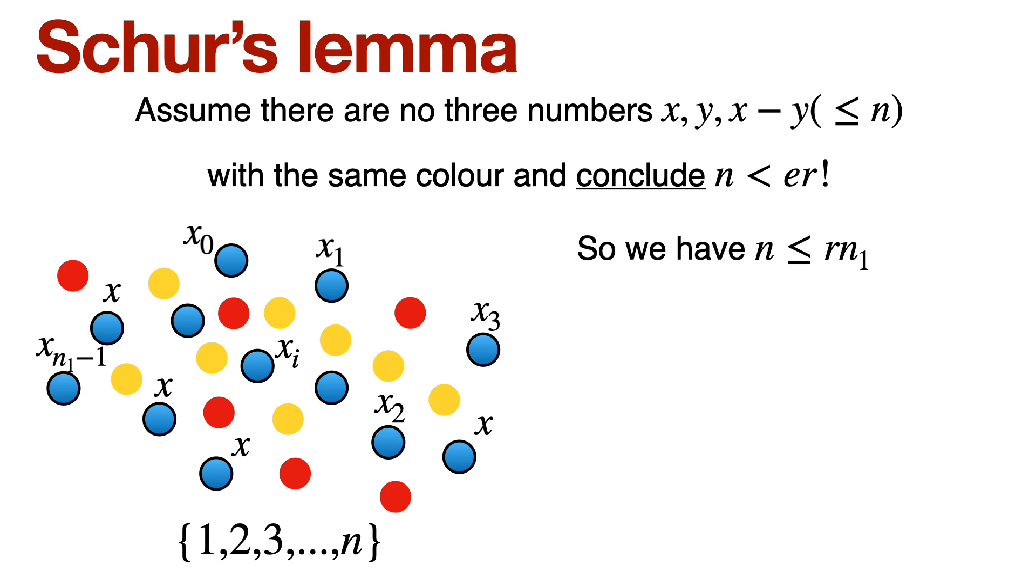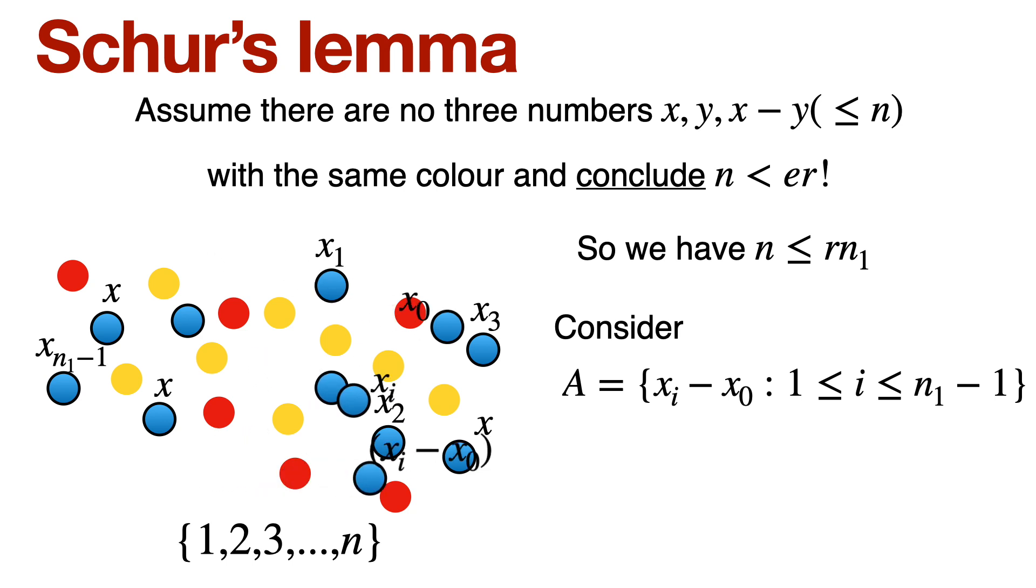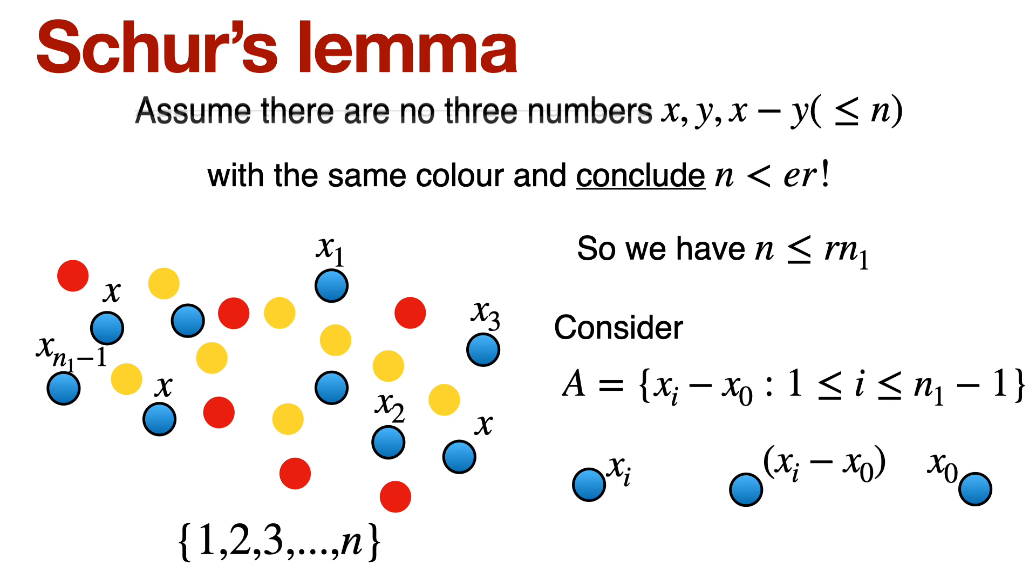Now here is the real genius of this proof, okay? What we do next is consider the following set. The set is we look at xi minus x0 as i varies from 1 to n1 minus 1. So basically we take the smallest number x0 and subtract it off from each of the elements x1 to the last number. Now when you do this, you cannot have any of the xi minus x0 as blue. Let's see why. Supposing one of the xi minus x0 was actually blue, then what you have is a number xi minus x0, which is blue, x0 that is blue, and xi that is blue. And all of these numbers are non-negative and are positive and are less than n. So what does that mean? It contradicts our assumption, right? That there are no three numbers of the same color, x, y and x minus y. So because of this contradiction assumption, we realize that no element of the set a can be colored blue, okay?